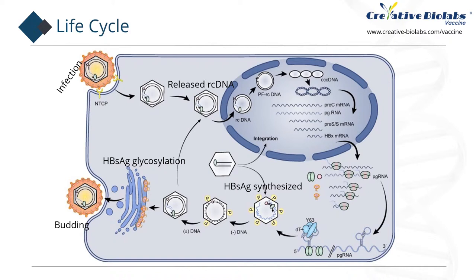In the nucleus, rcDNA may be transformed into covalently closed circular DNA (cccDNA) through DNA replication mechanisms. The cccDNA has a high degree of stability and can be maintained in the nucleus for months to years, which is the root cause of virus rebound after antiviral treatment. Therefore, the clearance of cccDNA is of decisive significance in the radical treatment of hepatitis B. The virus uses cccDNA to transcribe 3.5 kb, 2.4 kb, 2.1 kb and about 0.8 kb mRNA, in which 3.5 kb is the pre-genomic RNA, which can reverse transcribe genomic DNA and acts as a template for encoding virus core protein and polymerase protein.